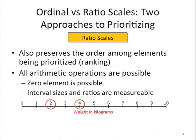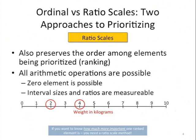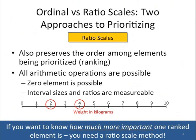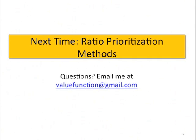And a temperature of 100 degrees Celsius is not twice 50 degrees Celsius, because temperature is not a ratio variable. So the takeaway for ratio approaches: if you want to know how much more important one ranked element is, then you need a ratio scale method. Next time we'll be talking about ratio prioritization methods. If you have any questions, you can email me at valufunction@gmail.com.